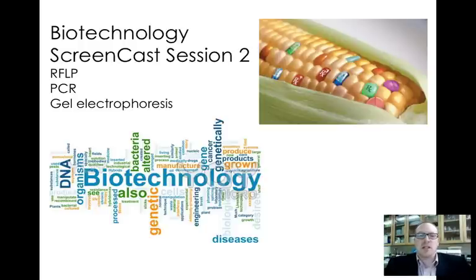This screencast session is going to highlight what we call RFLP, or Restriction Fragment Length Polymorphism Analysis, more commonly known as your DNA fingerprint. There are two other techniques that I'm going to talk about today that you need to do in order to do a DNA fingerprint, and that's called PCR, which is known as polymerase chain reaction, and gel electrophoresis. So we're going to discuss those three techniques today. Let's get going.